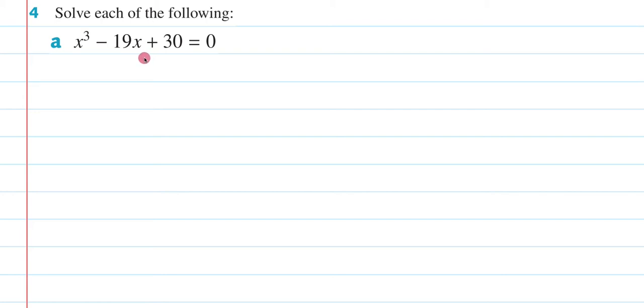So remember, the aim of the game is to get it into a factorized form so we can use our null factor law to solve for x. Now, in order to get it into that factorized form, the first thing you should look for is whether or not we have a common factor that we can take out to the front, and in this case we don't. So that means this is going to be quite a long question in order to get this in its factorized form.